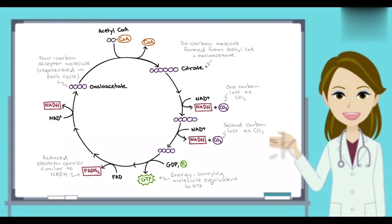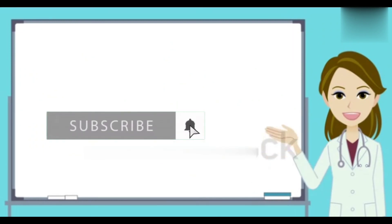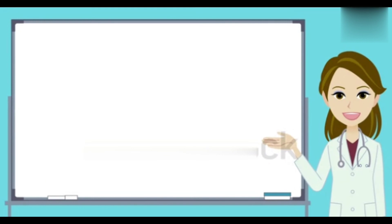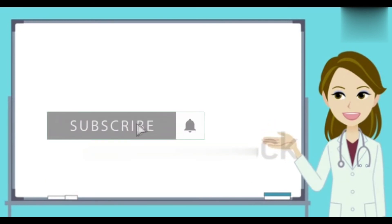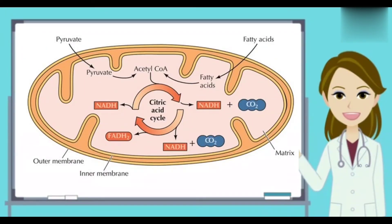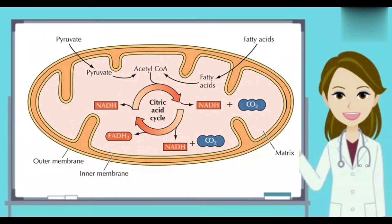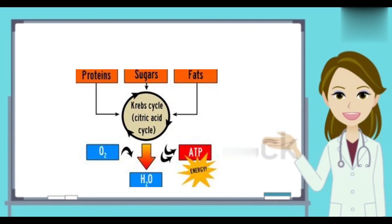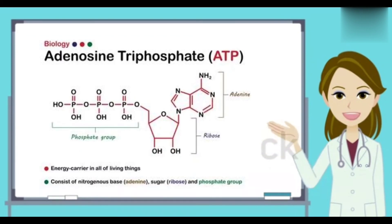There will be a transfer of energy to the electron transport chain. In our next video we will discuss the electron transport chain, which is the third stage of cellular respiration. The purpose of the Krebs cycle is the complete oxidation of glucose, resulting in energy-rich molecules that later produce ATP in the electron transport chain.